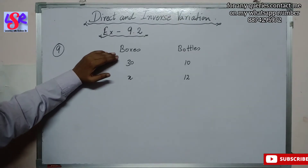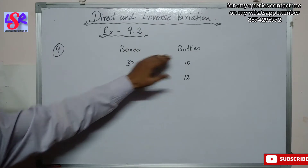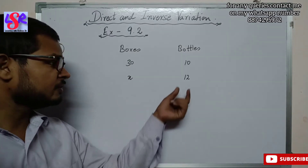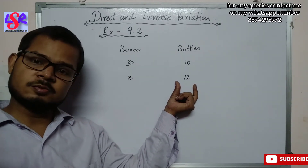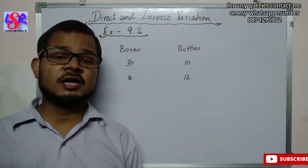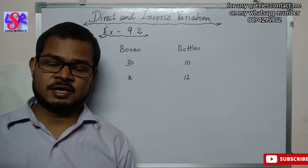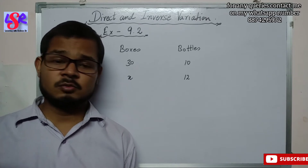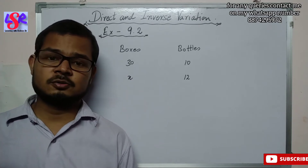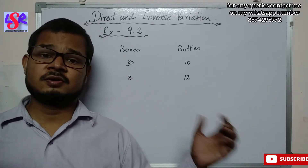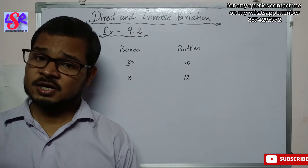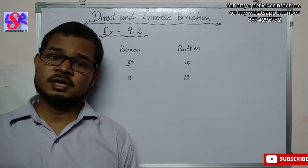Here we have boxes and bottles. If we use 30 boxes, we put 10 bottles in each box. Now if we put 12 bottles in each box, we need to find the number of boxes required. Since the total number of bottles is fixed and we are just re-adjusting bottles per box, the number of boxes will be reduced if we put more bottles per box, and increased if fewer — so it is a case of inverse variation.